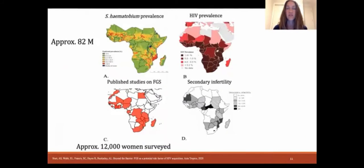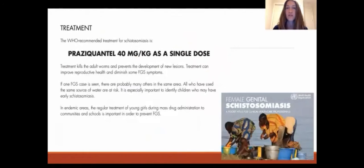Due to the challenges in diagnosis, there is an information gap: we suspect 82 million women are living with S. haematobium infection, but in the published literature there are only approximately 12,000 documented FGS cases. There is also a treatment gap — praziquantel 40 mg/kg is the currently recommended FGS therapy, but studies performed in Tanzania and Zimbabwe have shown that FGS lesions do not uniformly resolve with this treatment. Thus there are a number of gaps in the FGS field requiring further research, including epidemiology, diagnostics, immunopathology, treatment, comorbidities, and policy.